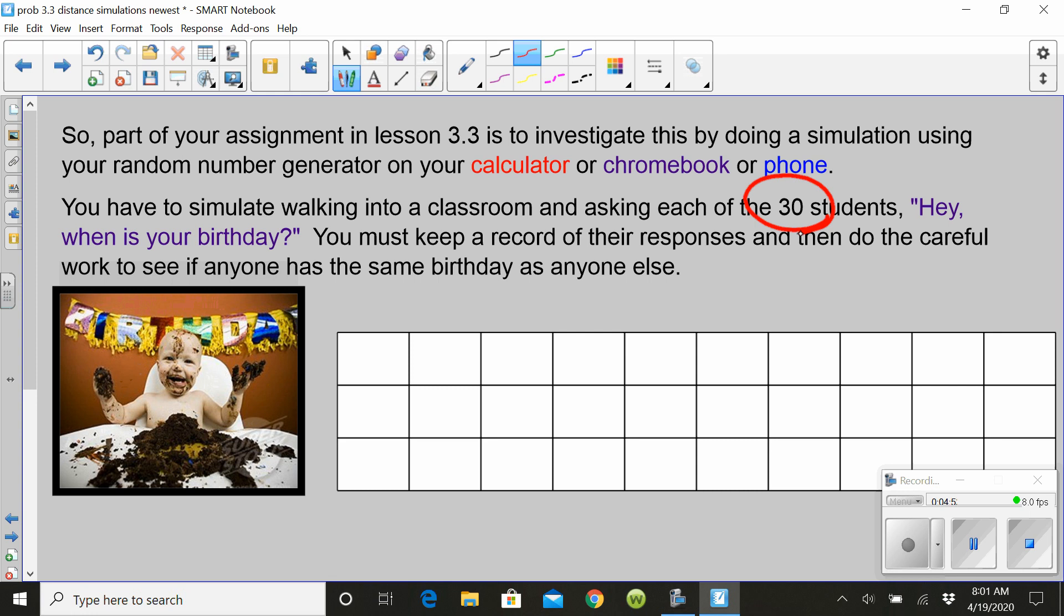So how do you simulate asking somebody when their birthday is and then being able to record it? What we normally have done in class, and to save time I think I'm just going to tell you here, after a lot of experimenting and discussion, we usually end up doing this: we generate random numbers from 1 to 365, because there's 365 days in the year. Actually there's 366 this year because it's a leap year, but let's stick with 365. So what I want you to do in that first exercise in the assignment is exactly what I'm showing here.